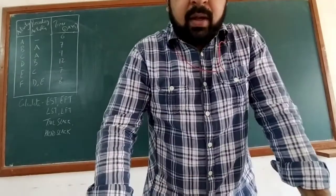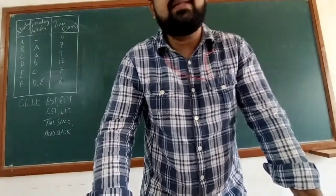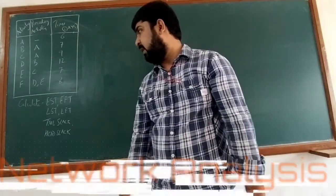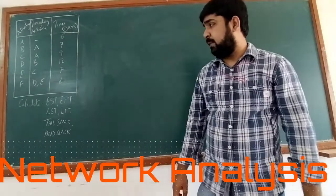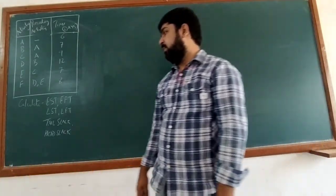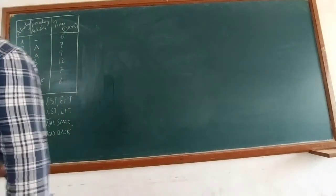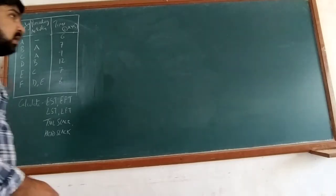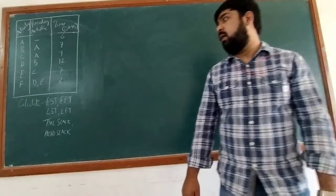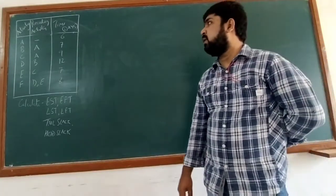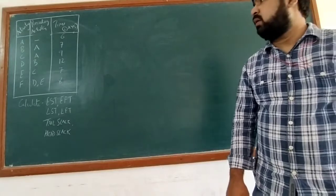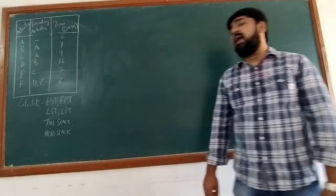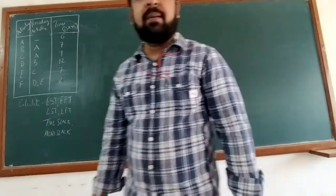Today in this class we will be studying network analysis and we will be calculating two things: the earliest start time and earliest finishing time, the latest start time and latest finish time for every activity. We also have to calculate free slack and dead slack respectively. Before we move further, we have to construct a network diagram, calculate the particular path, and determine the project completion time.